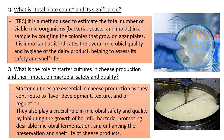What is total plate count (TPC) and its significance? TPC is the method used to estimate the total number of viable microorganisms — those which are live and can be grown — in a sample by counting the colonies that grow on an agar plate. Everything is counted together: yeasts, bacteria, and molds — total viable microorganisms, not just bacteria or fungi separately. It is important as it indicates the overall microbial load in the sample, the hygiene of the dairy product, and helps assess safety and shelf life.